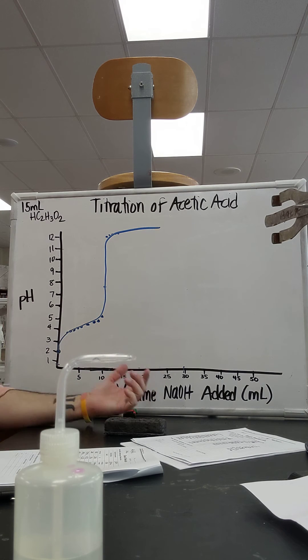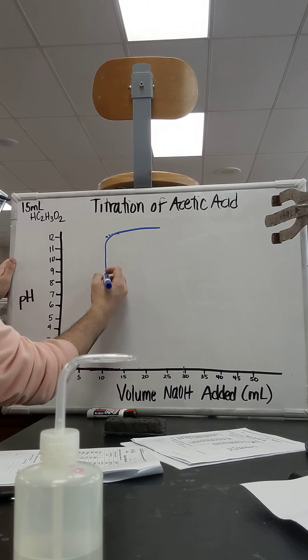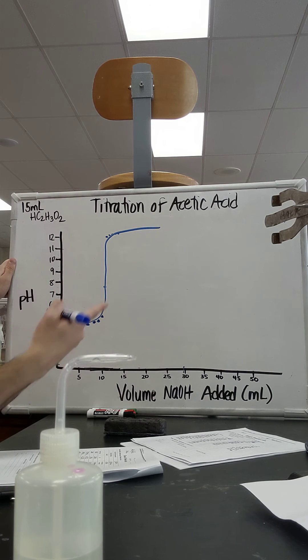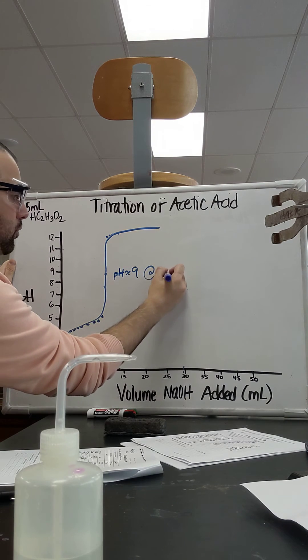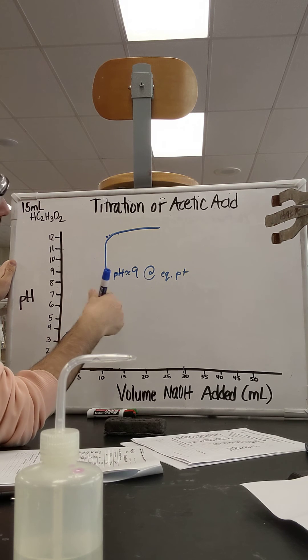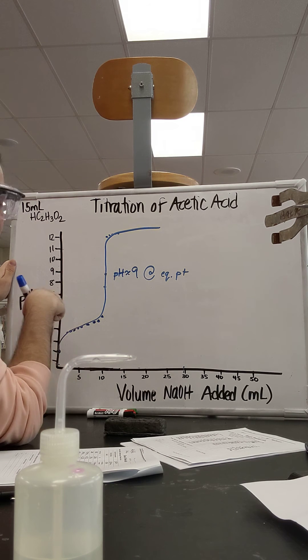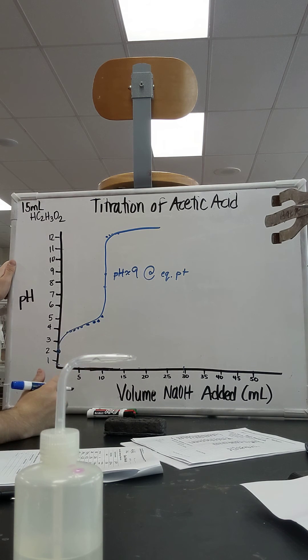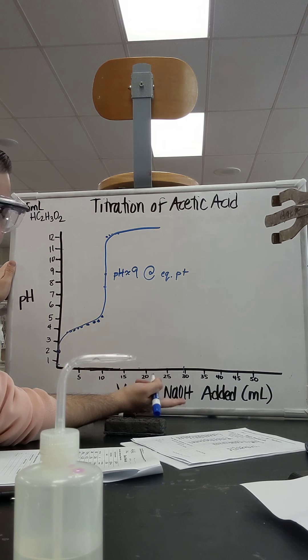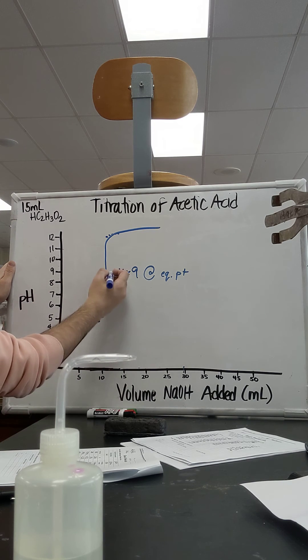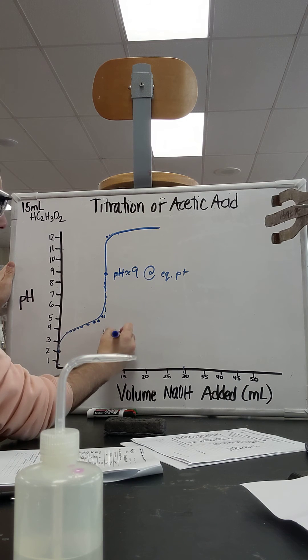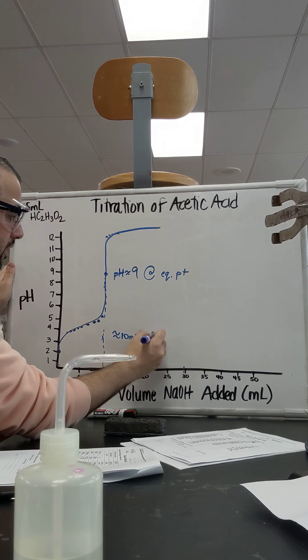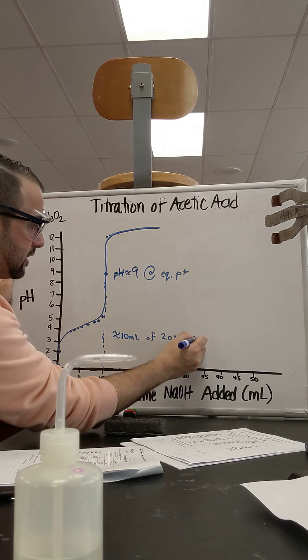And so it looks like my equivalence point. And this is true for a titration of a strong base with a weak acid. Looks like my equivalence point, the pH is about 9 at the equivalence point. It's higher. If I titrate a strong base with a weak acid, the pH at the equivalence point is going to be basic because I have the strong base. If I had the opposite, if I titrated a strong acid with a weak base, my pH is going to be lower. And so now that I know this is kind of like my equivalence point, I could go on down and see that it took approximately 10 milliliters of 2 molar NaOH to titrate this.